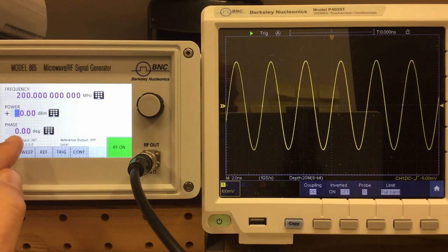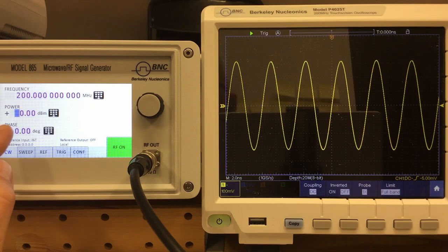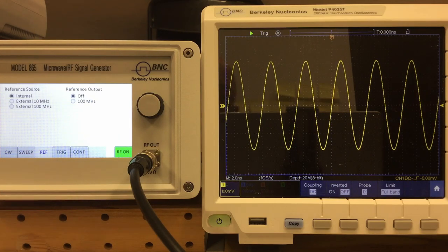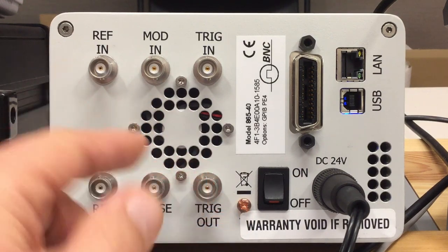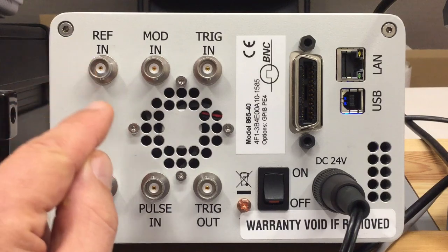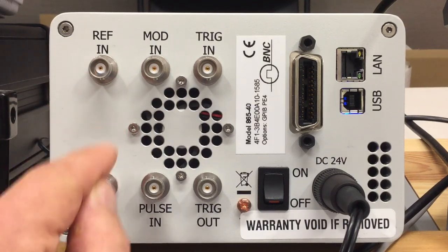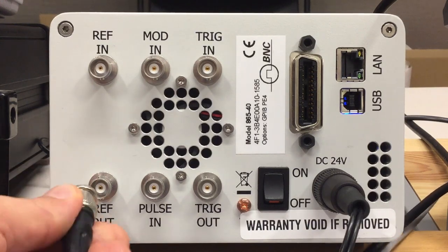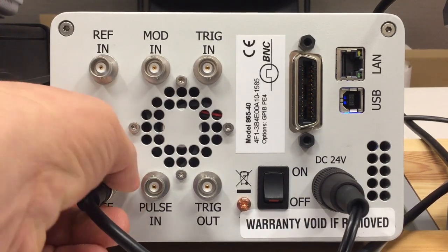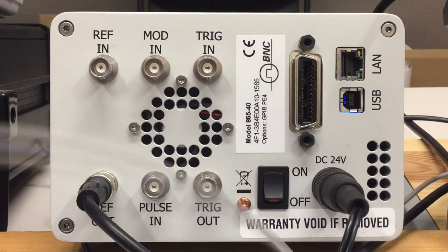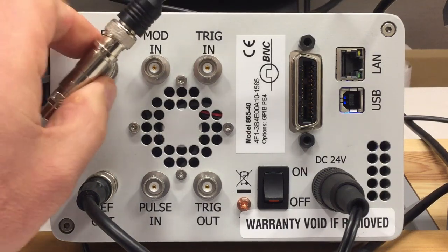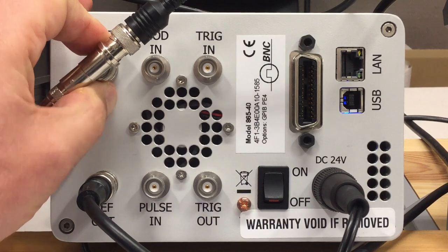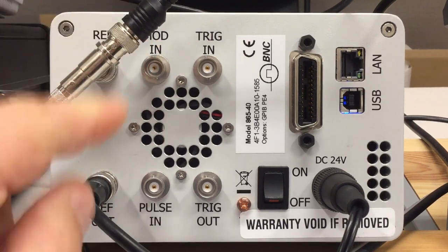Associated with the reference menu, you find two BNCs at the back: reference in and reference out. When talking about reference, we are talking about the 100 MHz oven controlled crystal oscillator in that thing. So let's connect the scope to the reference out, and we'll at least try to feed in an external reference through the reference in, but that might not work out. More about that in a second.